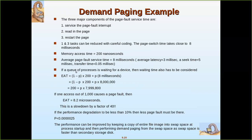Using the effective access time formula with memory access time of 200 nanoseconds and page fault service time of 8 milliseconds: if only one page fault occurs out of 1000 accesses, the effective access time is around 8.2 microseconds, which is a slowdown by a factor of 40. To reduce this degradation and improve performance, the page fault probability must be kept below 10%. If a page fault occurs for every page, performance degrades significantly.